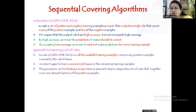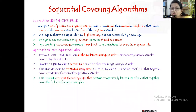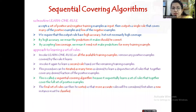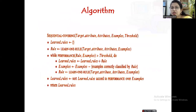We iterate this process as many times as needed. The final output is a disjunction of the set of rules learned using this algorithm — first one rule, then another is added, and so on, until we have a conjunction of all the rules. This is called the sequential covering algorithm because it sequentially learns a set of rules that together cover the full set of positive examples. The final set of rules is then sorted so that more accurate rules are considered first whenever a new instance must be classified.